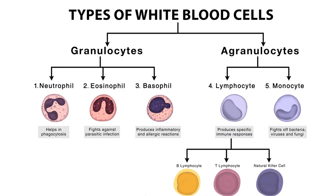White blood cells are predominantly involved in fighting infections and participating in inflammatory reactions, while red blood cells carry oxygen to the body. Platelets help stop bleeding. The normal number of white blood cells ranges from around 4 to 11 billion cells per liter.